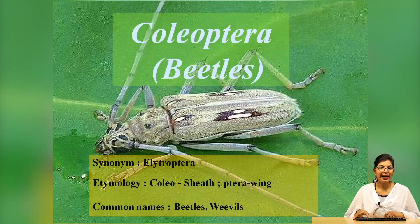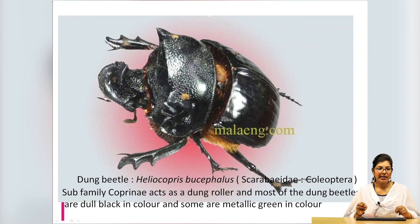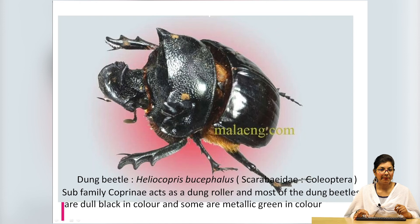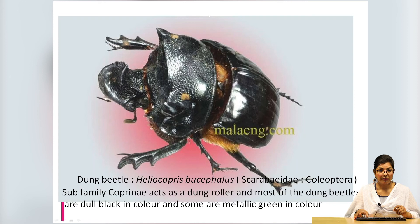The order Coleoptera includes beetles, which also act as bioindicators. Dung beetles, for example, are dung rollers — most are dull black in color, some are metallic green. They play an important role in maintaining soil quality and contribute to physical and chemical soil formation. They also participate in biological control and biological monitoring of pollution from oil, sulfur, CO2 and other insecticides.